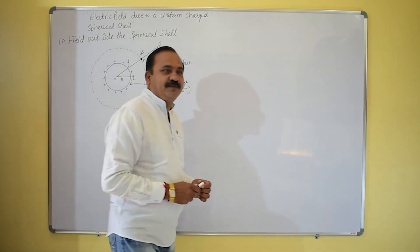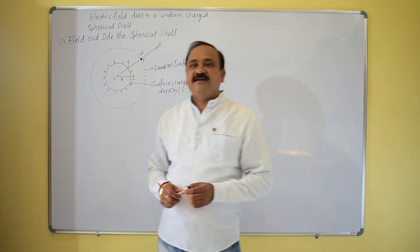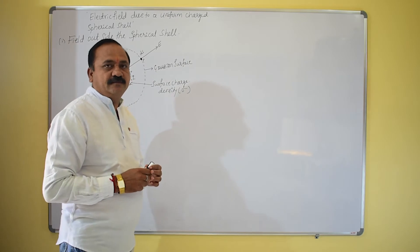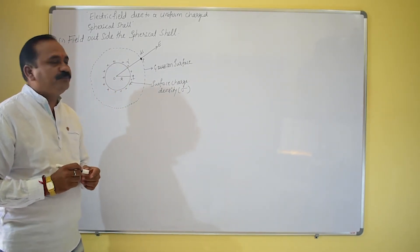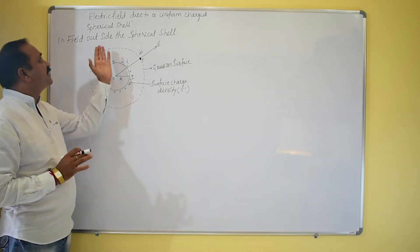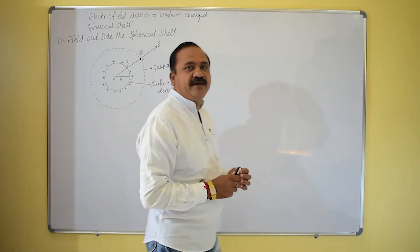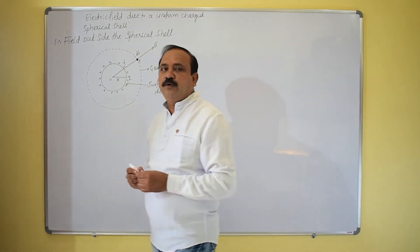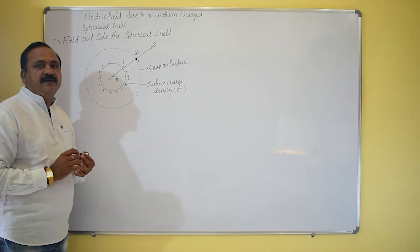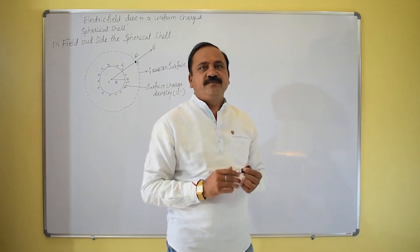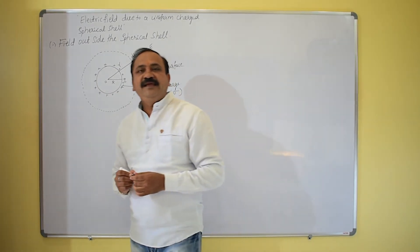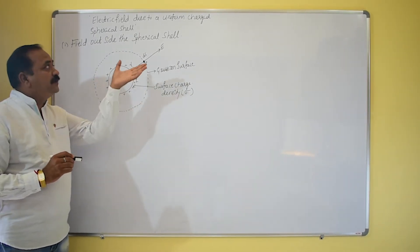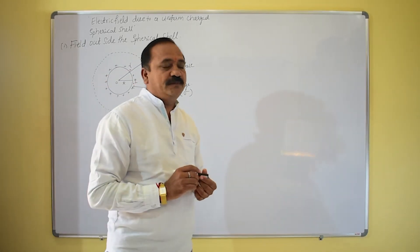Good morning, dear students. Today I am going to discuss the last concept — the last derivation of applications of the Gauss theorem — that is the electric field due to a uniform charged spherical shell. This is one of the important concepts. For the board examination, this derivation has been asked three to four times: derive the expression for electric field at a point due to a spherical shell using the applications of Gauss law.